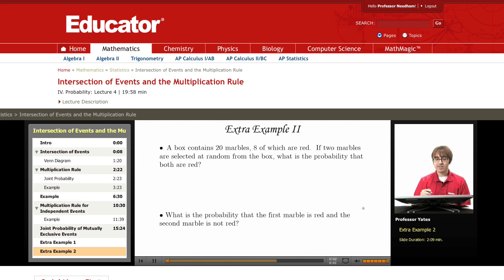Our next example: a box contains 20 marbles, eight of which are red. If two marbles are selected at random from the box, what is the probability that both are red?